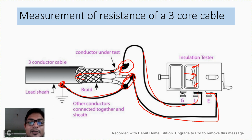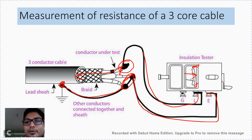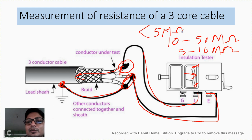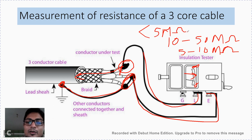Once we confirm the insulation resistance meets the required values, the cable can continue in operation. Good insulation resistance is between 10 to 50 mega ohms. A value between 5 to 10 mega ohms is considered abnormal. Once it falls below 5 mega ohms, the insulation is in a critical condition and the cable must be replaced completely to ensure safe and proper operation.